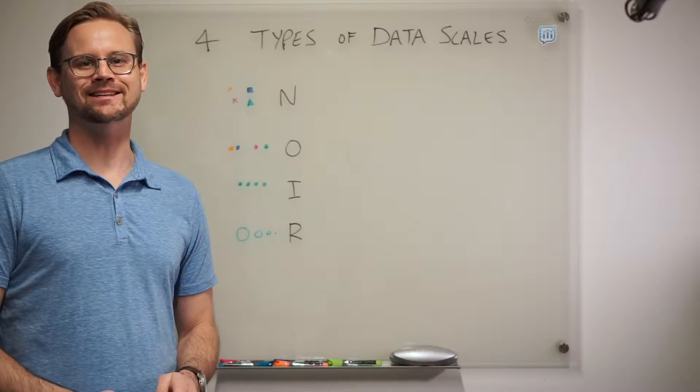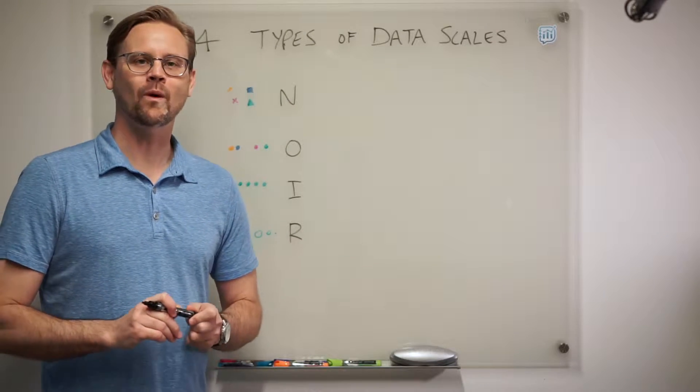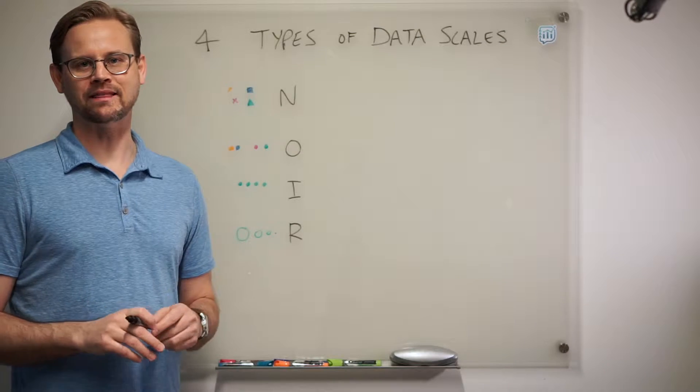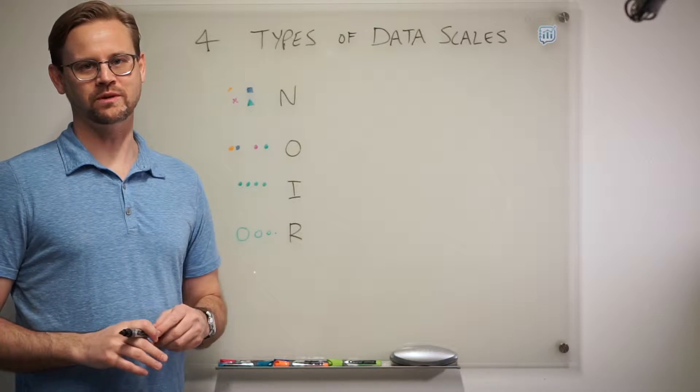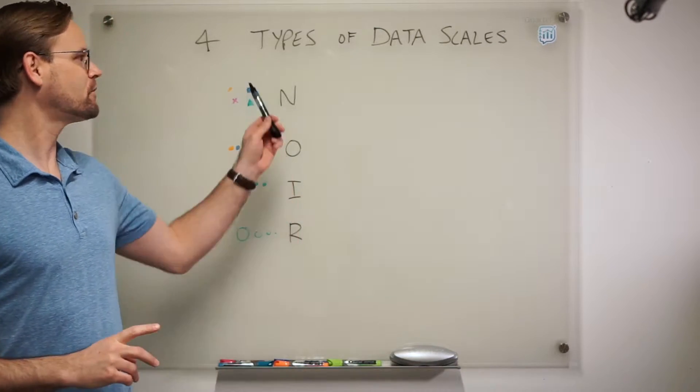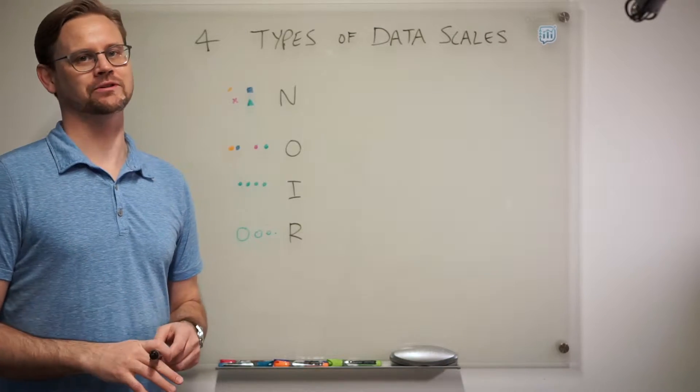Hey everyone, this is Ben Jones with dataliteracy.com. I'm doing a whiteboard series to cover some topics I think are helpful for anyone who works with data on a regular basis. The first one is the four types of data scales.